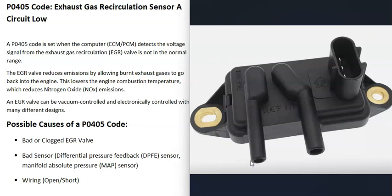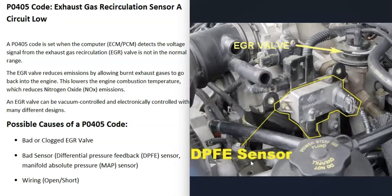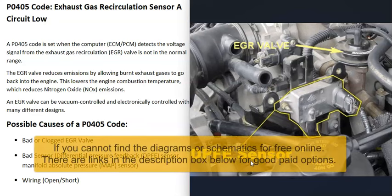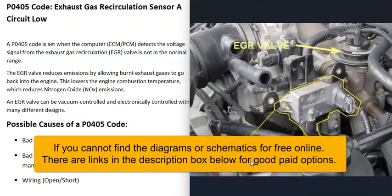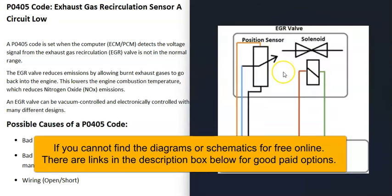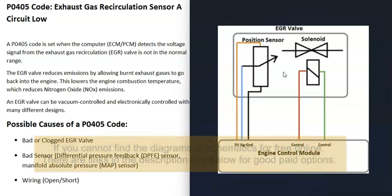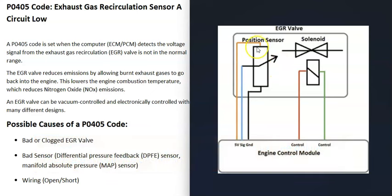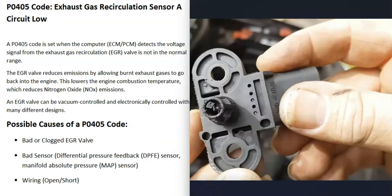The next possible cause is a bad sensor, such as a bad differential pressure sensor, a bad manifold absolute pressure sensor, or something similar. This will vary depending on the vehicle's year, make, and model. There can also be a sensor located inside the EGR valve called the EGR position sensor. It's a good idea to get a diagram for your specific vehicle to know what's going on with your EGR valve system.